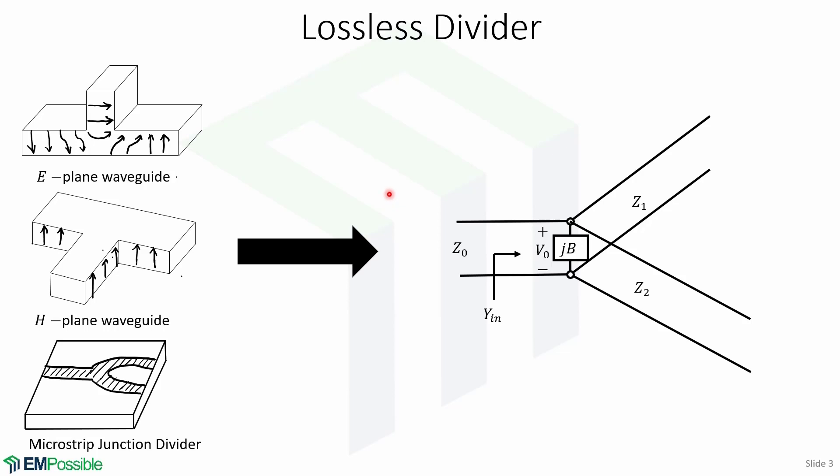The T-junction power divider is a simple three-port network that can be used for power division or power combining, and it can be implemented in virtually any type of transmission line.